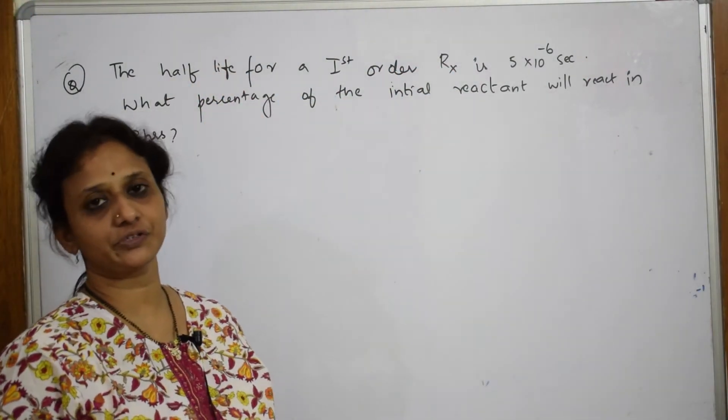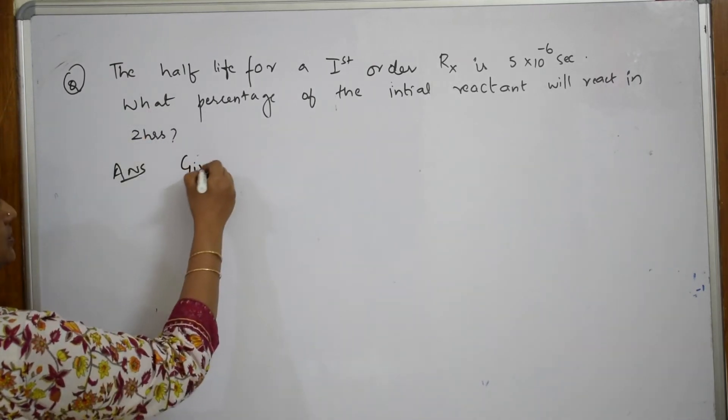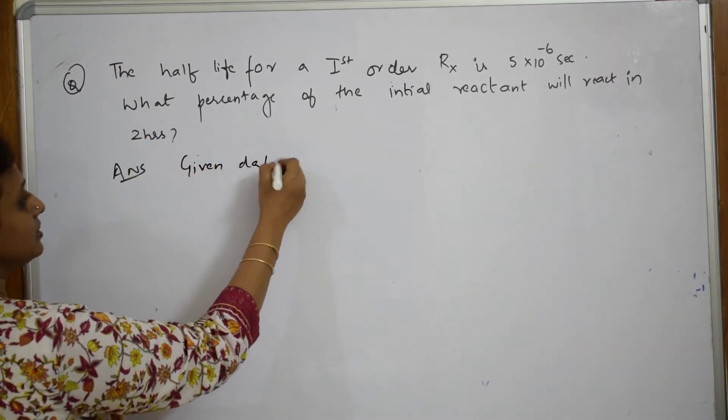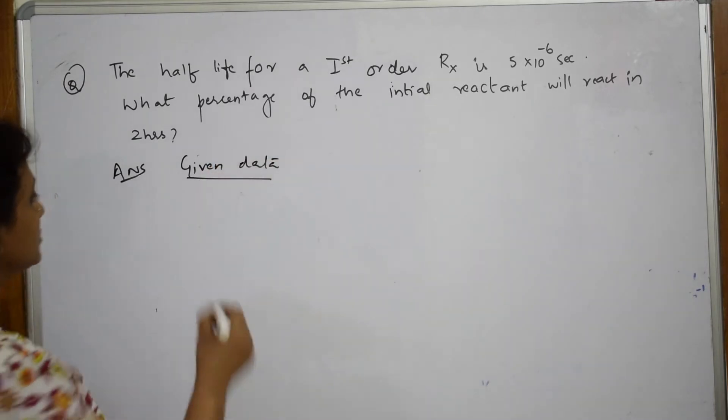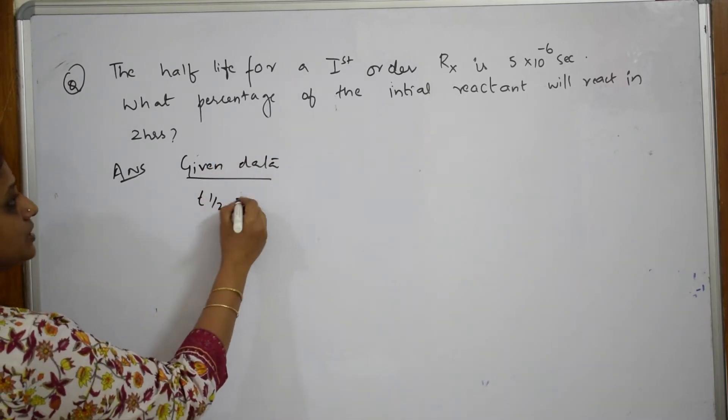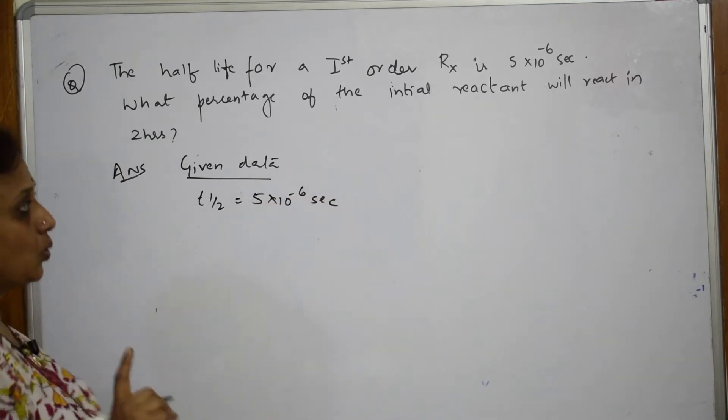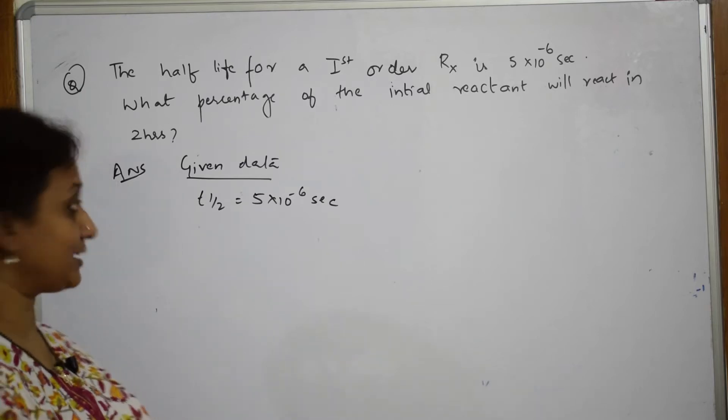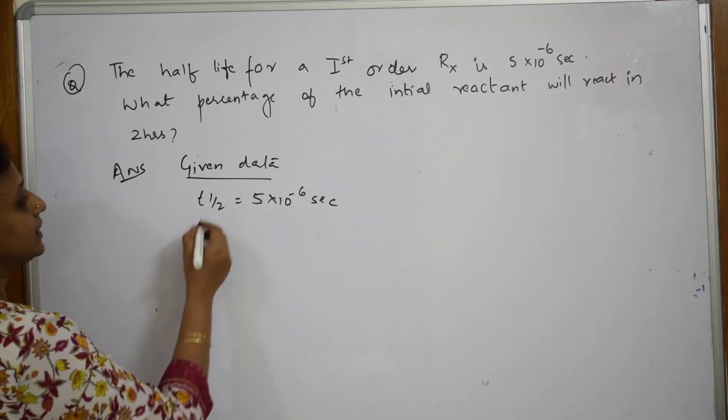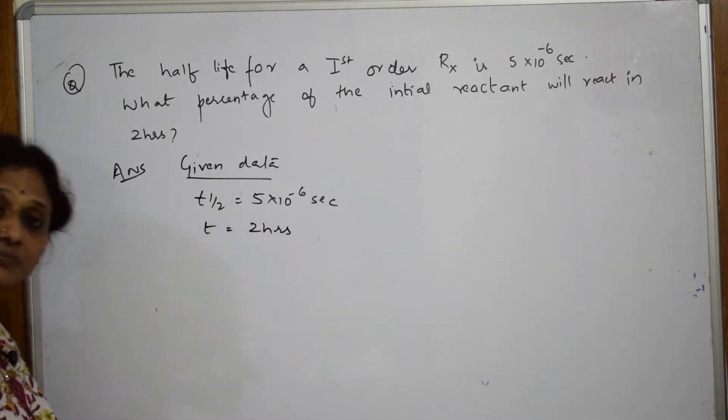Let us do one more numerical for the first order rate equation. Let us read this. First I have to write the given data. The half-life of a first-order reaction t_half is given to me as 5×10^-6 seconds. What percentage of the initial reactant will react in 2 hours? Time is given as 2 hours.